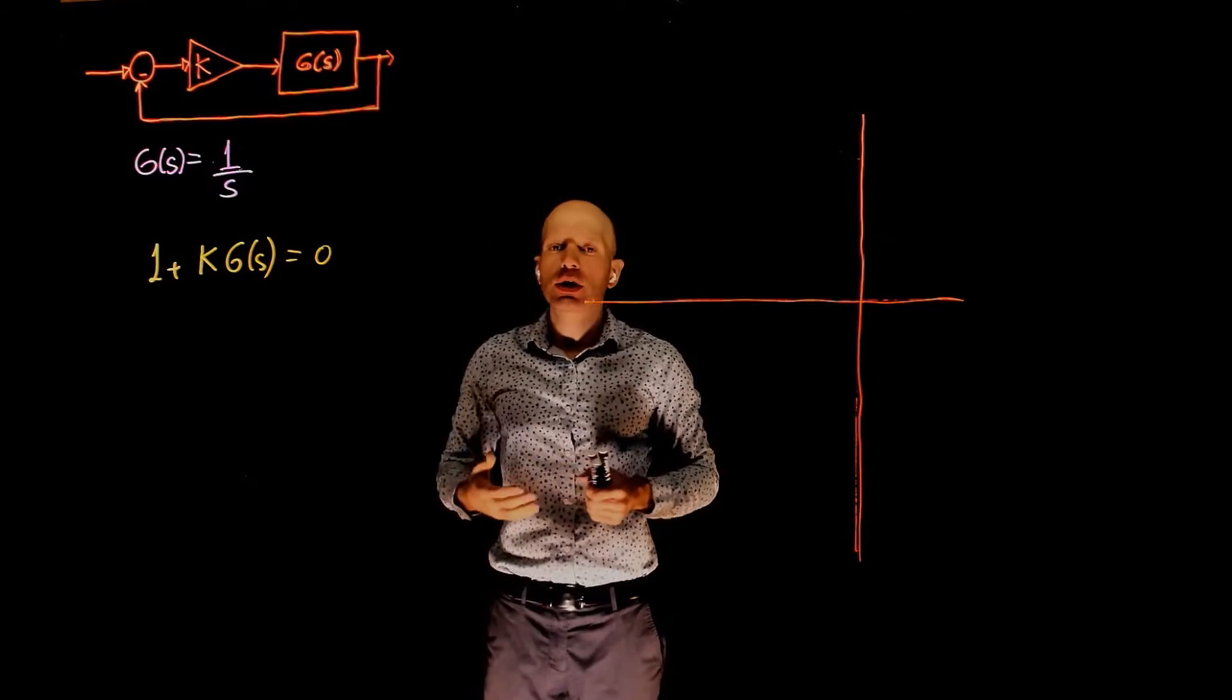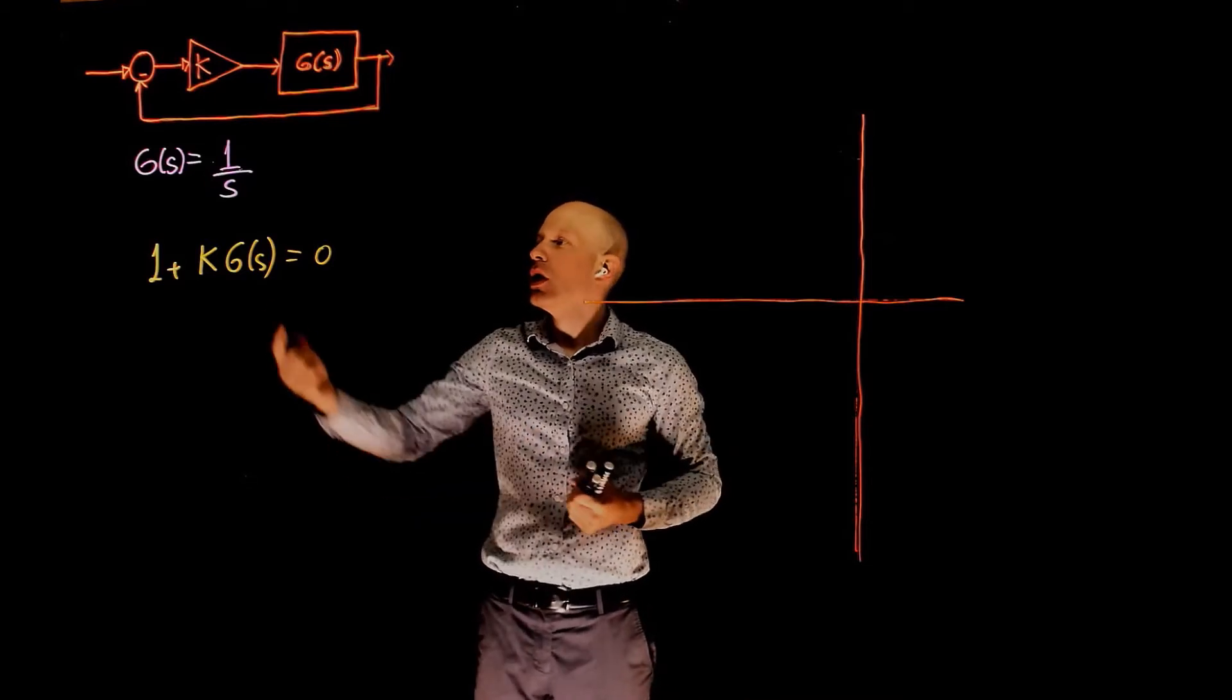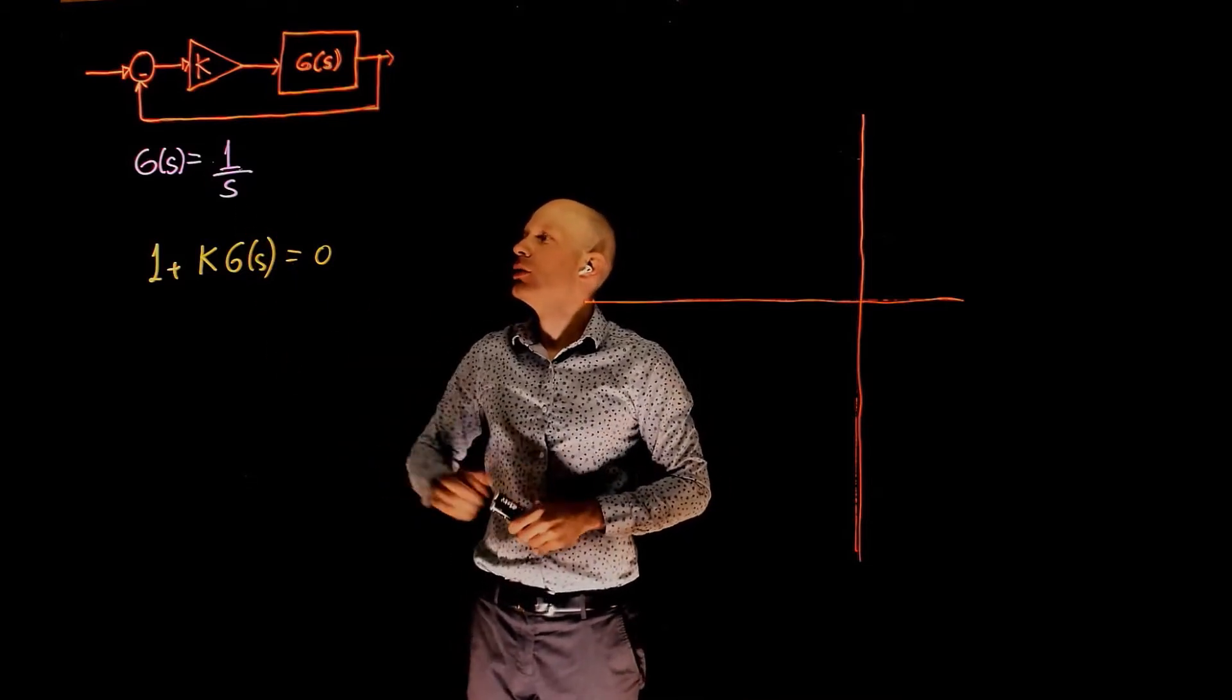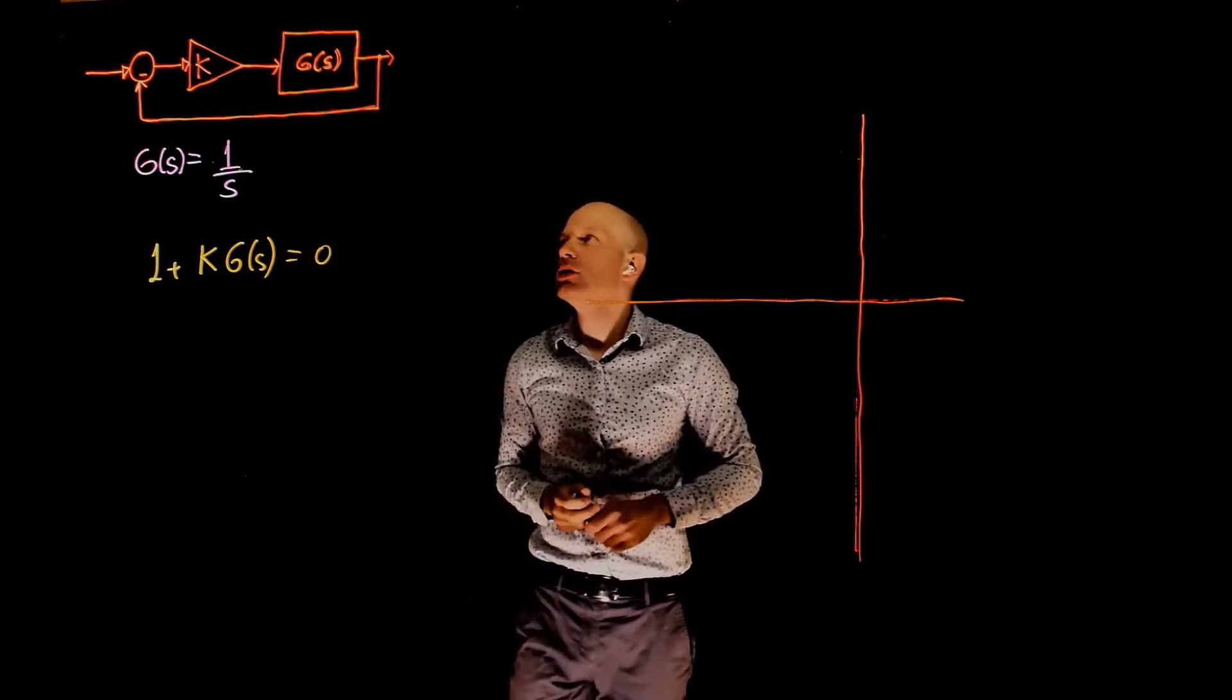We wish to determine the location of the closed-loop poles given the open-loop transfer function and the loop function here, k times g.